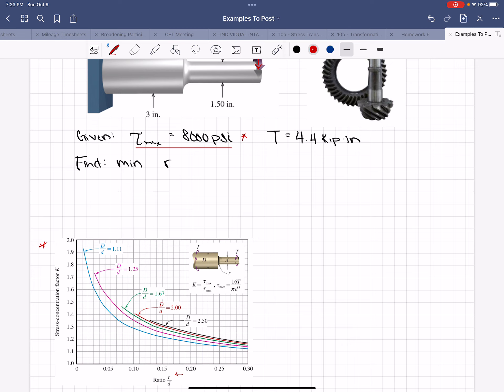We're going to need to use this table to relate our nominal shear stress to our maximum shear stress and then find out what r is limited to. So let's do that. We have a given of a maximum shear stress, we also are given a torque, and we're supposed to find a minimum r.